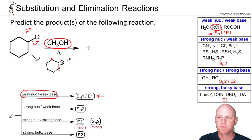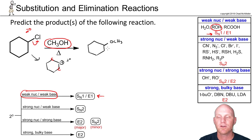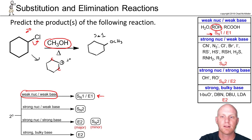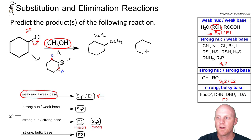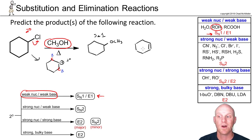For the substitution reaction, we would attach an OCH3 at the carbocation. This is not a chiral center, so no R/S designation needed — it's a single achiral SN1 substitution product. For elimination, the beta carbons are totally equivalent, so it doesn't matter which one we deprotonate to form the alkene. In a six-membered ring, you can only form cis alkenes, not trans — so there's only one E1 elimination product.